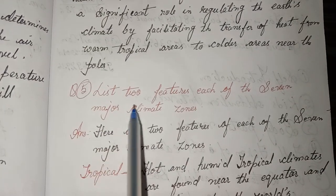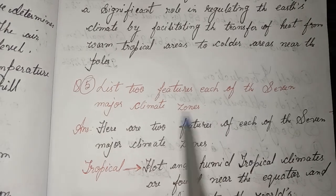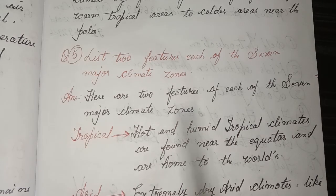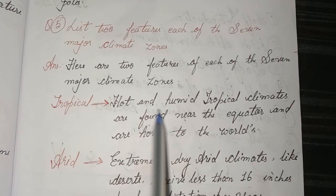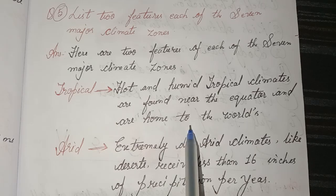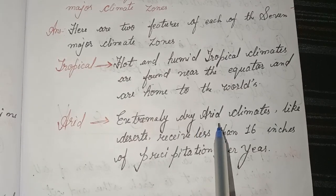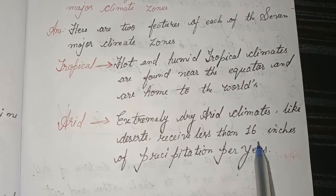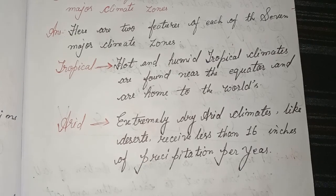Fifth, list two features each of the seven major climate zones. Answer: Here are two features of each of the seven major climate zones. First, tropical — hot and humid; tropical climates are found near the equator and are home to the world's rainforests. Second, arid — extremely dry; arid climates like deserts receive less than 60 inches of precipitation per year.